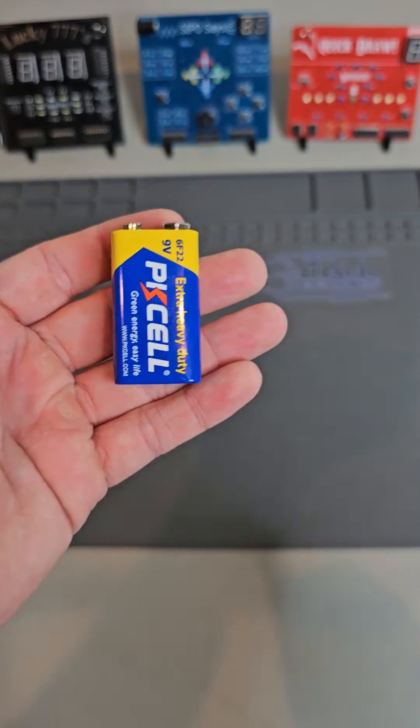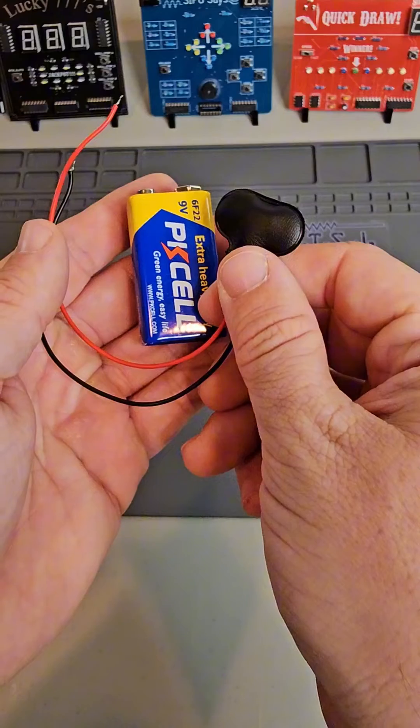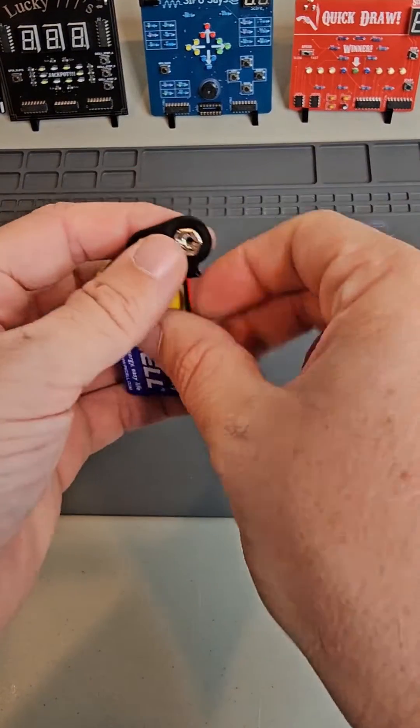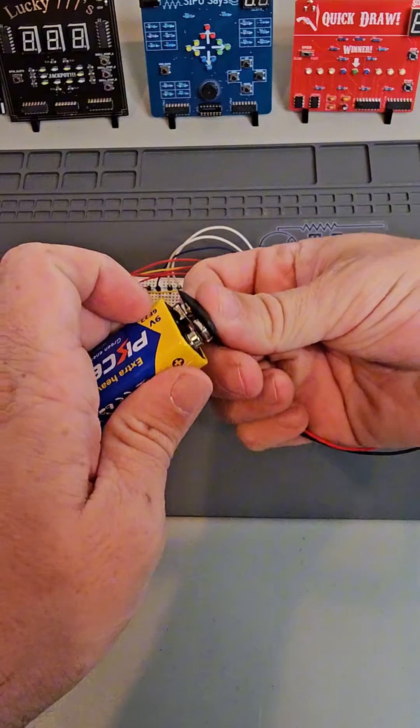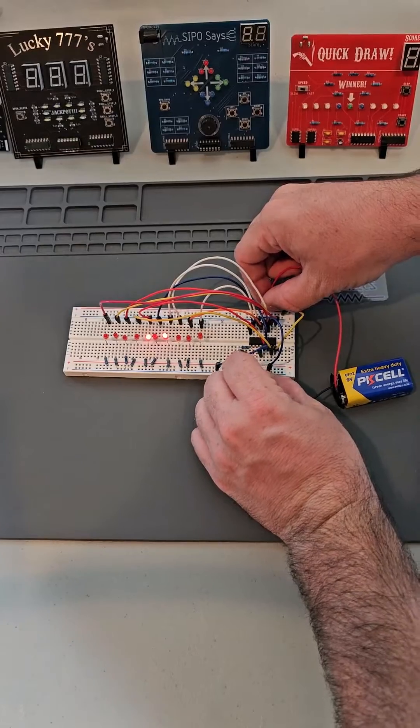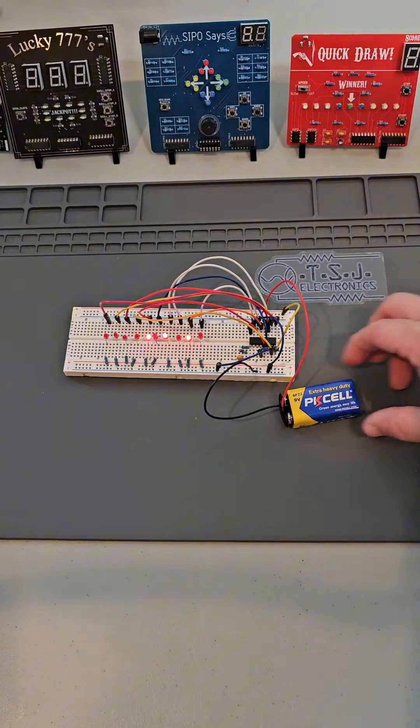We also need a power supply and connector. To power our circuits, I recommend using a 9 volt battery and a 9 volt battery connector. 9 volts are ideal for beginners and hobbyists because they are safe and have relatively low discharge current.